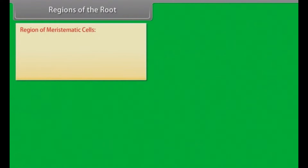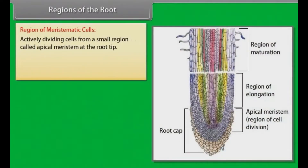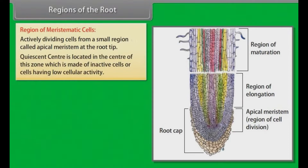Region of meristematic cells: Actively dividing cells form a small region called apical meristem at the root tip. A quiescent center is located in the center of this zone, which is made of inactive cells or cells having low cellular activity.